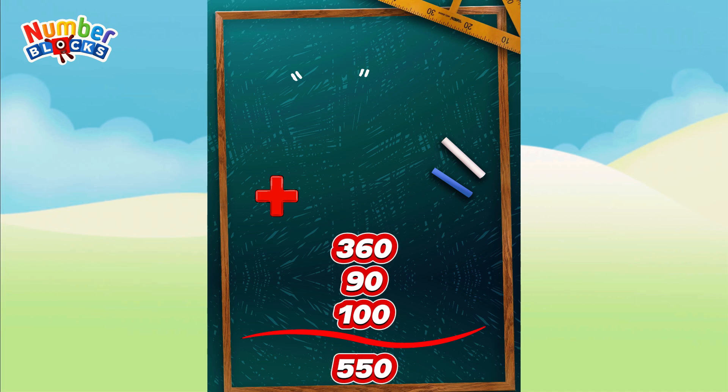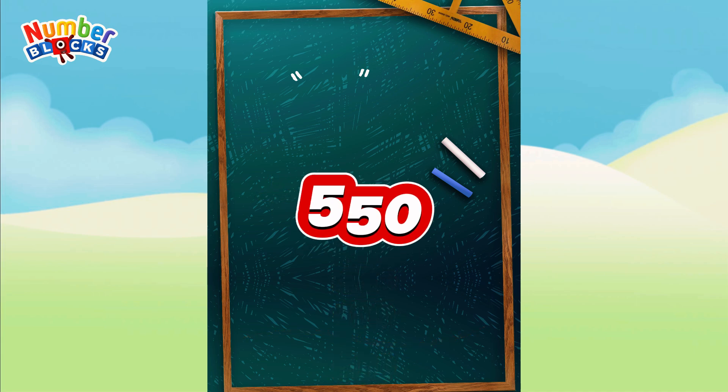360 plus 90 is equal to 450. 450 plus 100 is equal to 550.